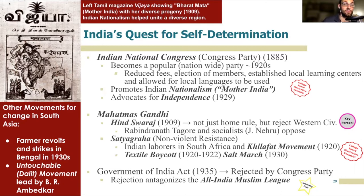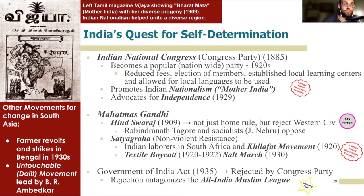Gandhi was a British-educated lawyer who had been living in South Africa during the war years. It was there that he formulated his idea of Indian self-rule, which he called Hind Swaraj — meaning not only self-rule for the people of South Asia, but also a complete rejection of what he believed was Western civilization. This is a reminder that people of the region were acutely aware of the technological and economic impact imperialism had on their lives, not just the changing of borders.